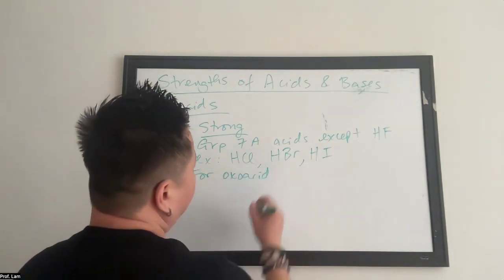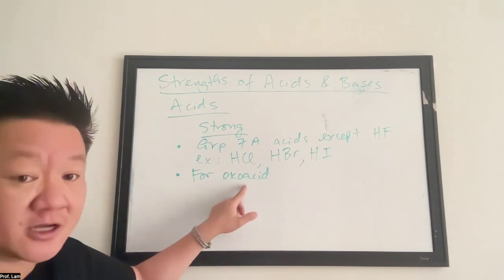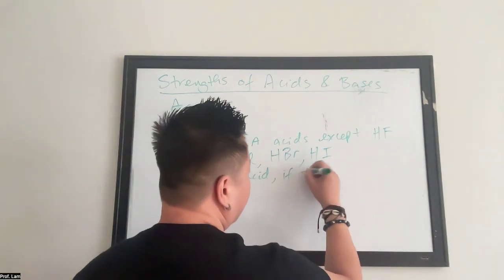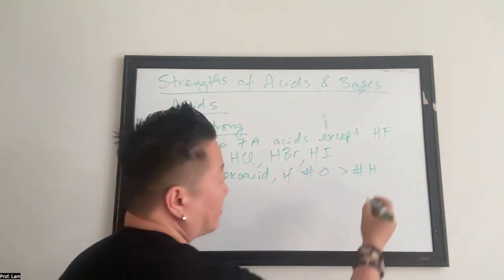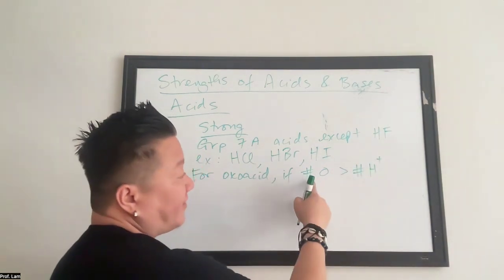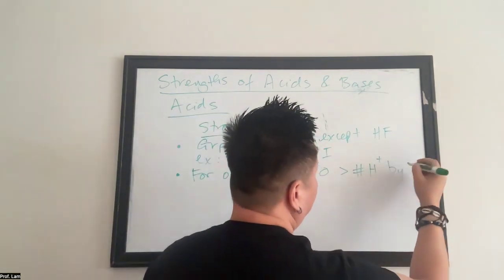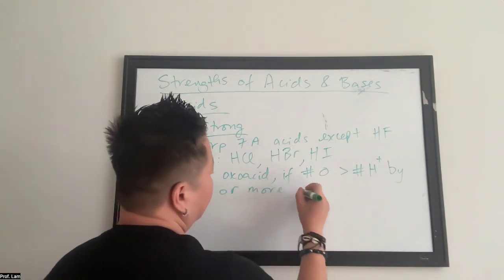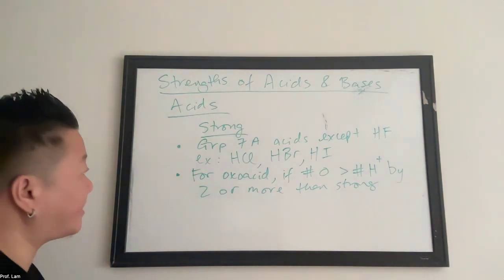Here's another way to tell that you have a strong acid. So if you have an oxoacid, remember what those are. Oxoacids are acids that are oxygen containing, hence oxo. So for oxoacid, all you need to do is count the number of oxygen and the number of protons. Take the difference between the two. So look at the number of oxygens and subtract the number of protons. If it is greater than, if that number of oxygen is greater than the number of protons by two or more, then it's strong. Otherwise it's weak.